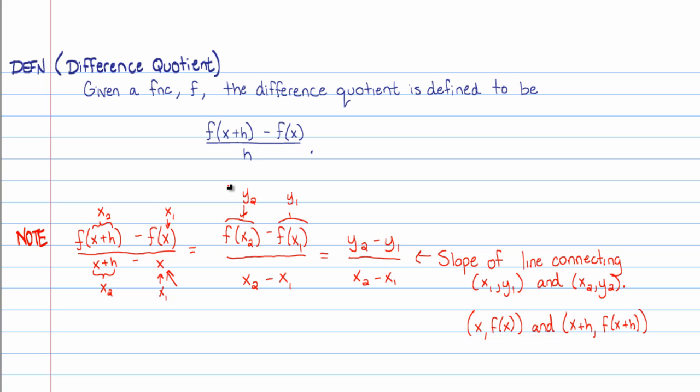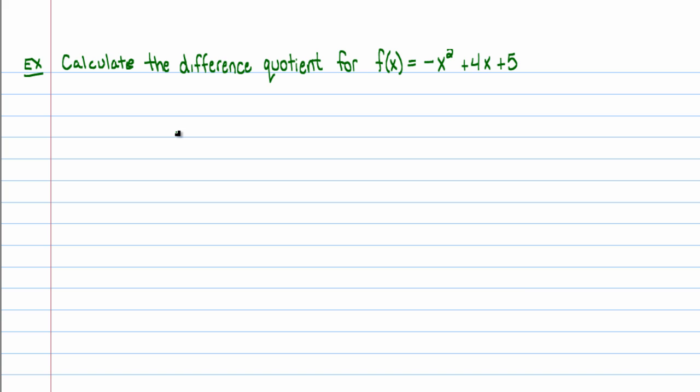So before we go even further into the conceptual understanding of this, let's do a little bit of a calculation here just to calculate the difference quotient for a function. Let's go ahead and calculate the difference quotient for the function f of x equals negative x squared plus 4x plus 5. Remember again, the difference quotient is just f of x plus a little bit of a wiggle minus f evaluated at x. So this is our second x value point and this is our first x value point. All being divided by h.